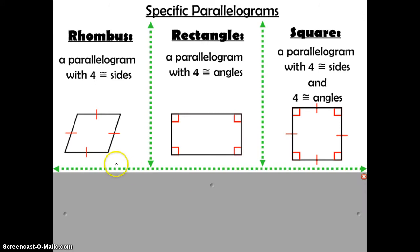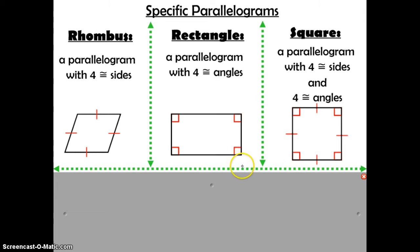A rhombus is a parallelogram with four congruent sides. A rectangle is a parallelogram with four congruent angles. And a square is a parallelogram with four congruent sides and four congruent angles. These are special things about each of the rhombus, rectangle, and square. But the fact that their definition says it's a parallelogram means that everything true about a parallelogram is also true about each of these.